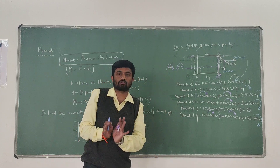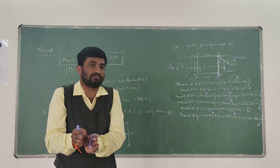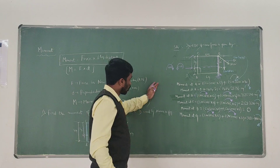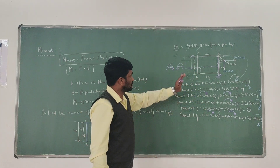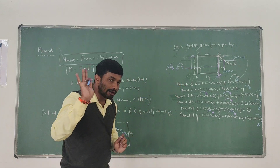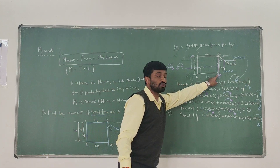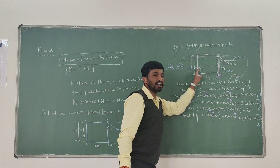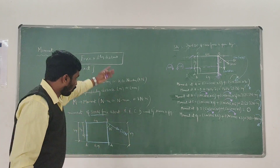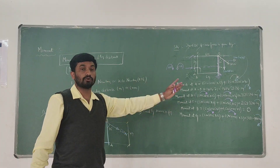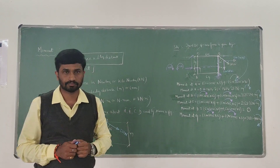This is how we compute the moment with respect to each point. The sign convention is very important: clockwise moments are positive, anticlockwise moments are negative. In this particular problem, only one inclined force is given, and we computed the moment with respect to each joint A, B, C, D, and G. Please follow these sign conventions to get accurate answers. Thank you.